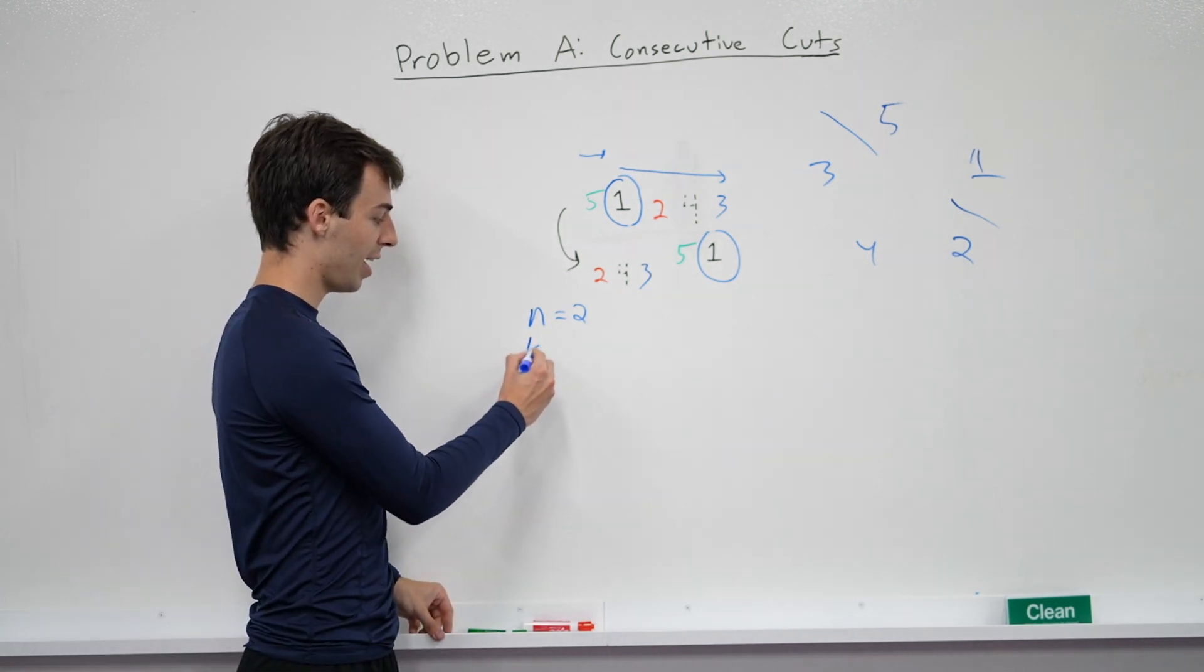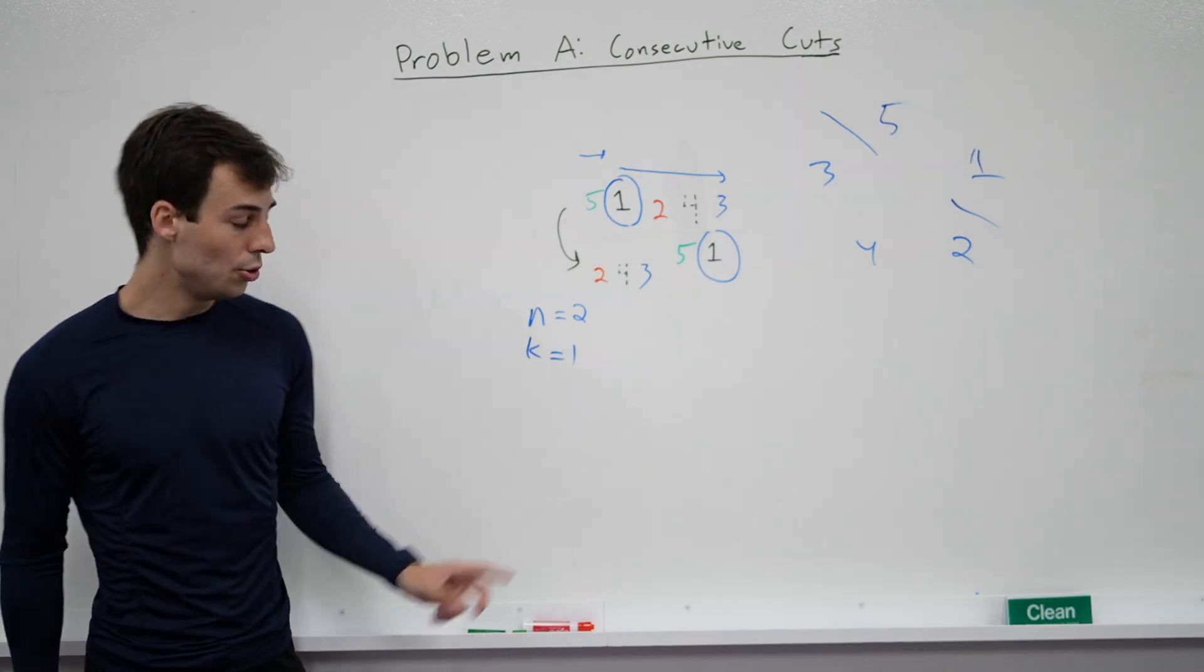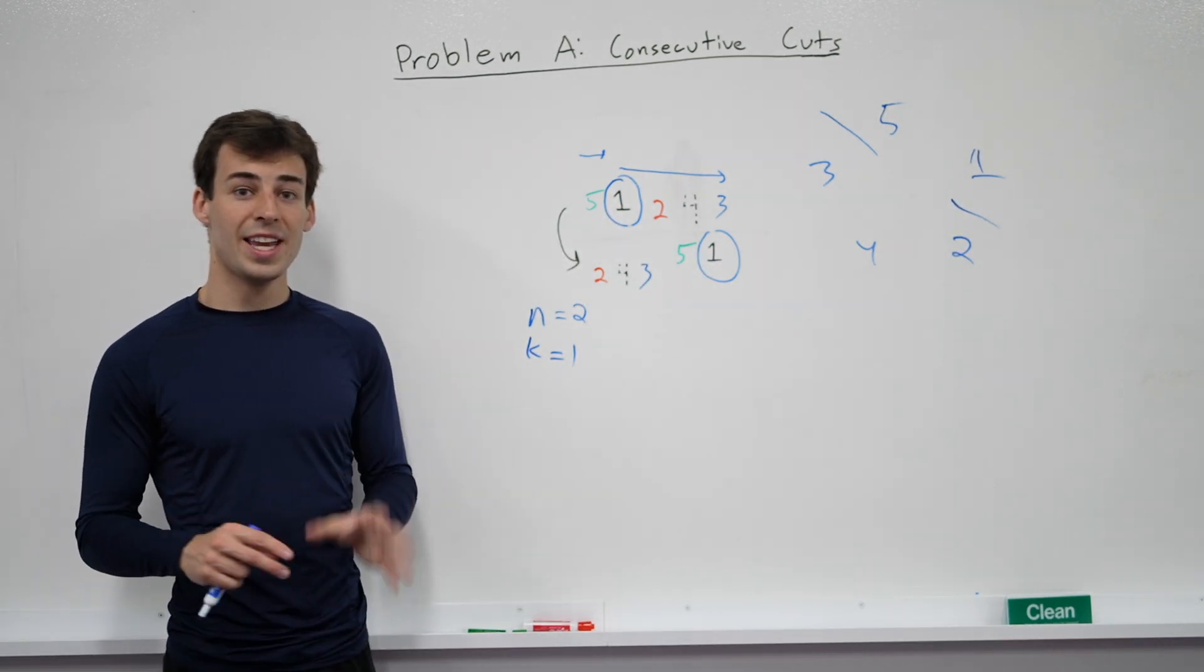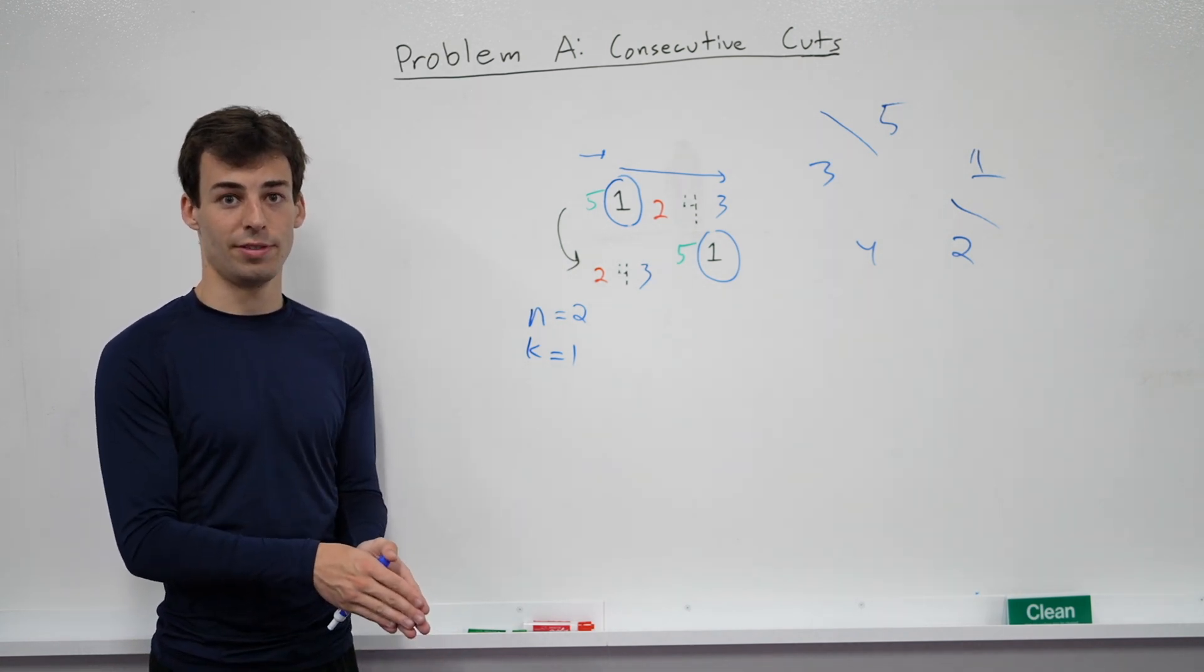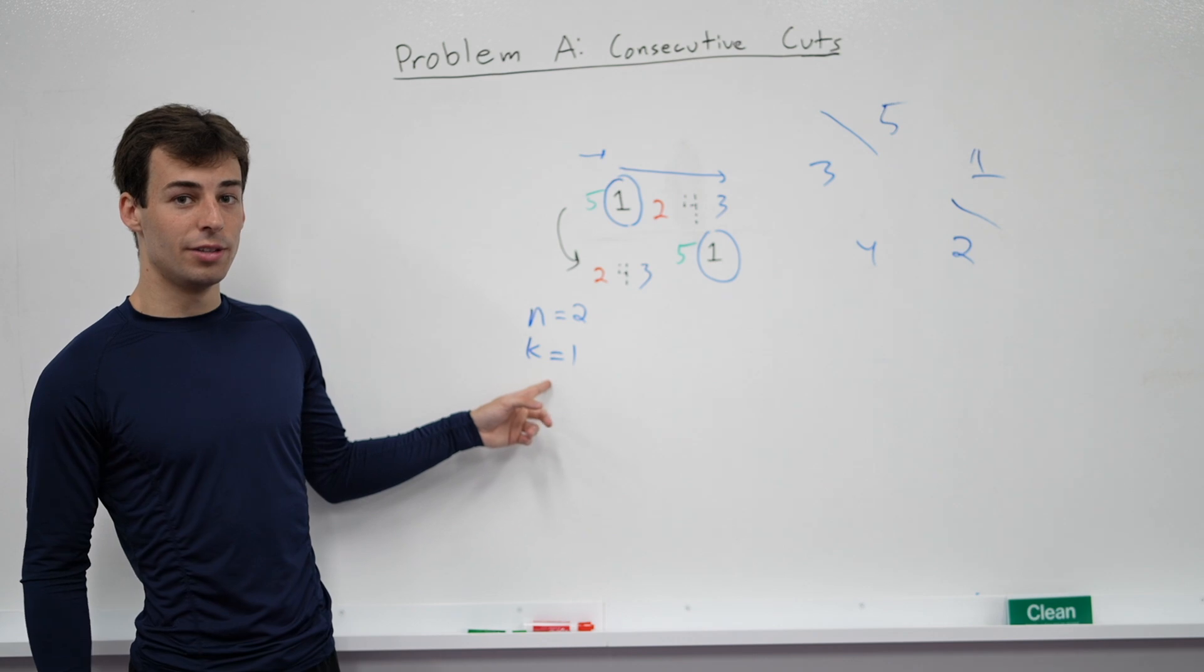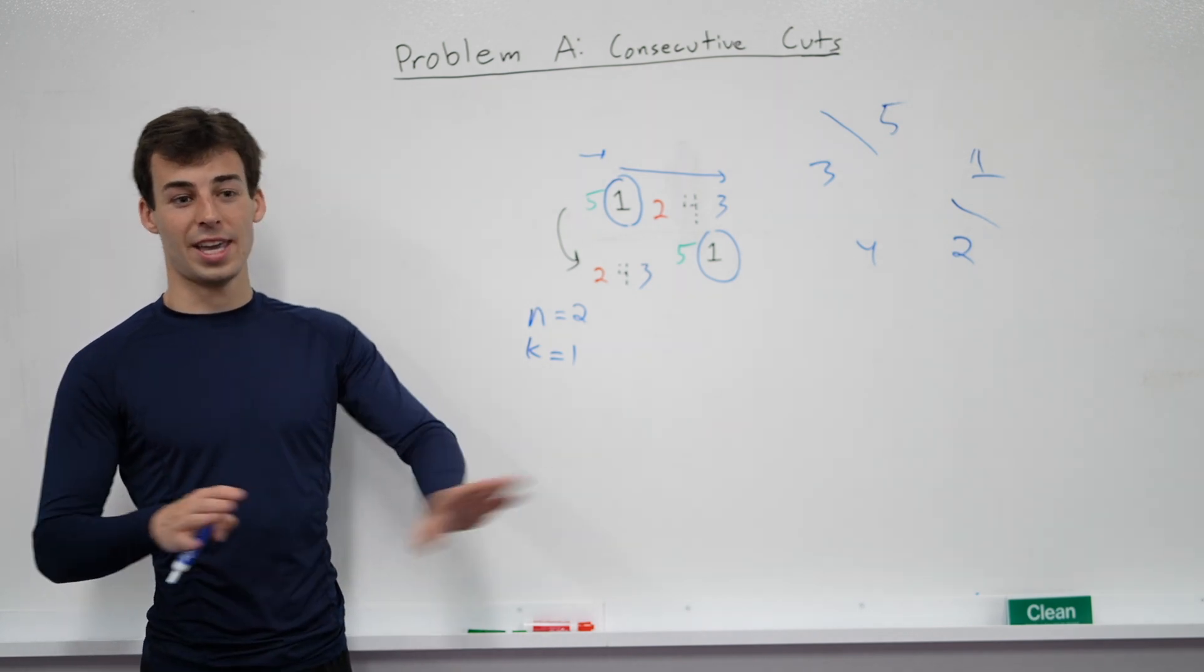You also have to be a little careful if k equals 1. So if k equals 1, that means your ending position of the array can't be the same as the starting position of the array. So if k equals 1, then they have to be different.